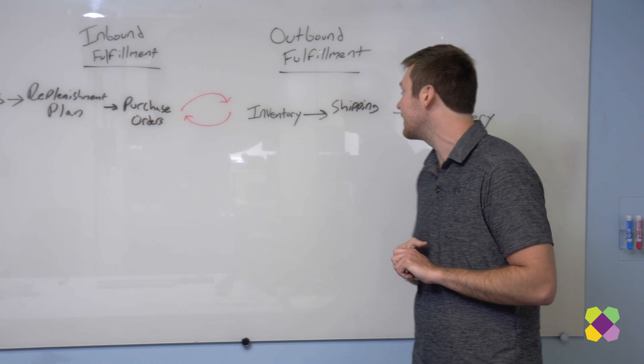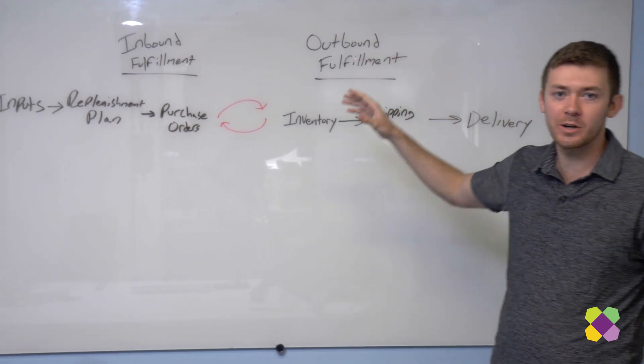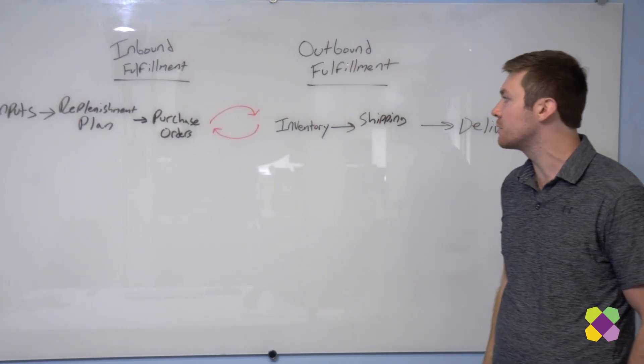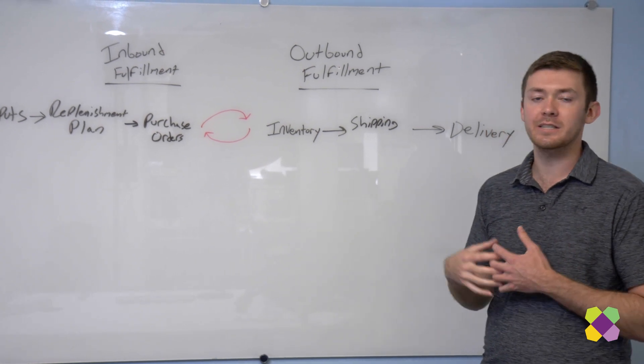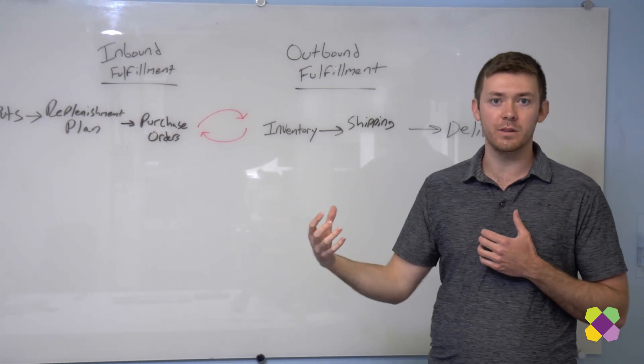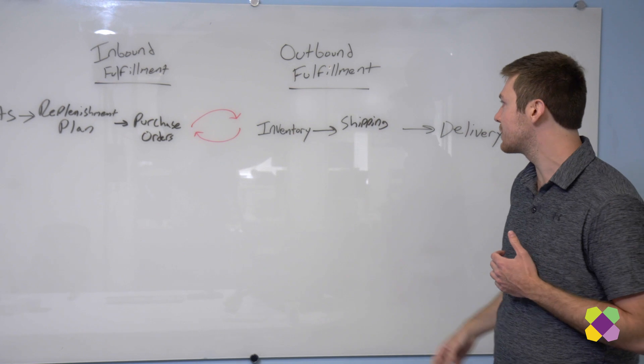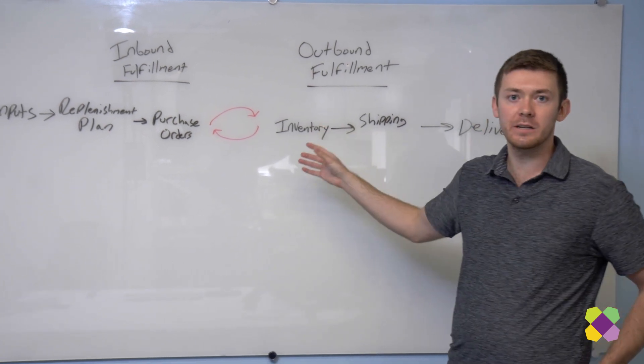So I'm going to start us out on the outbound fulfillment side. Joining Wayfair was very focused on once we have inventory in the network, how do we actually execute in getting the inventory to customers when they're purchasing something, specifically the actual inventory component itself.